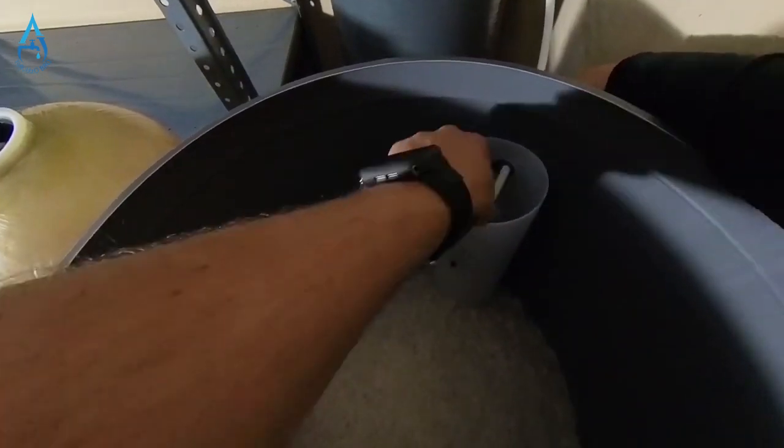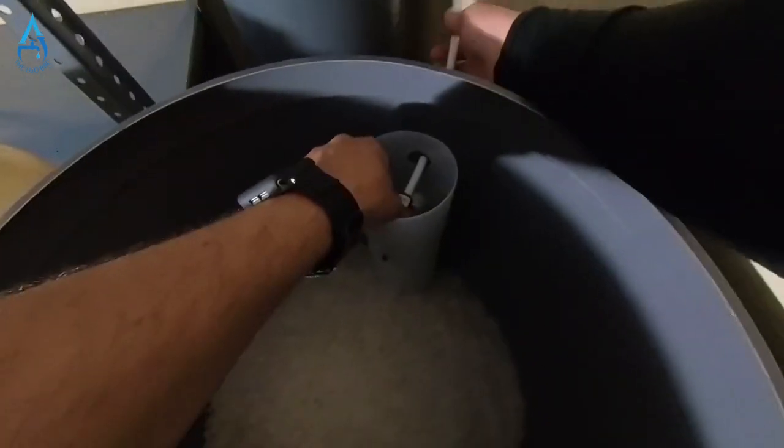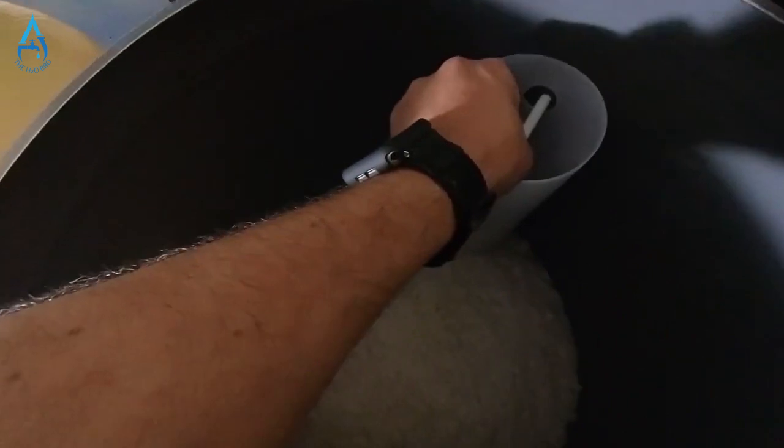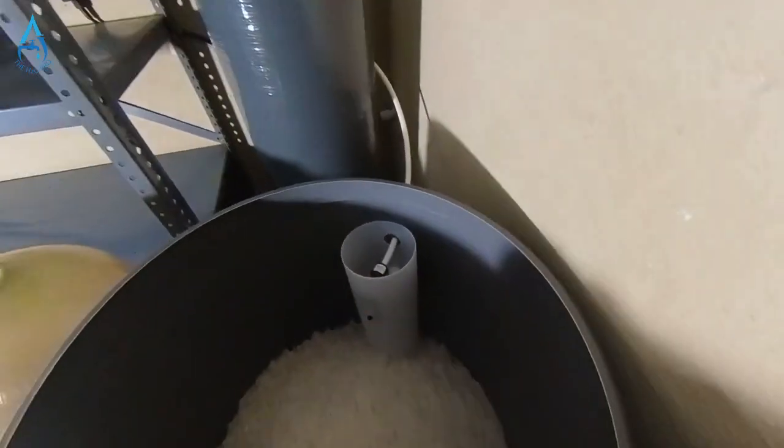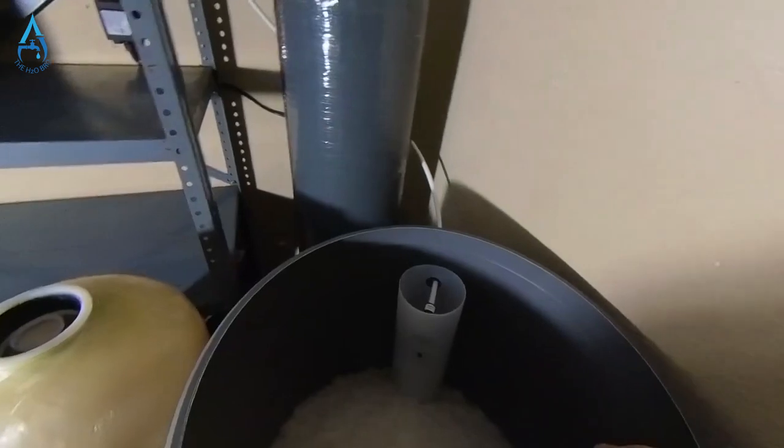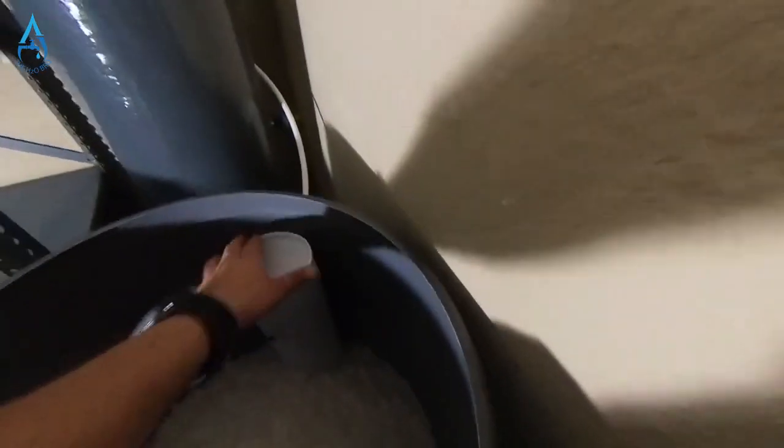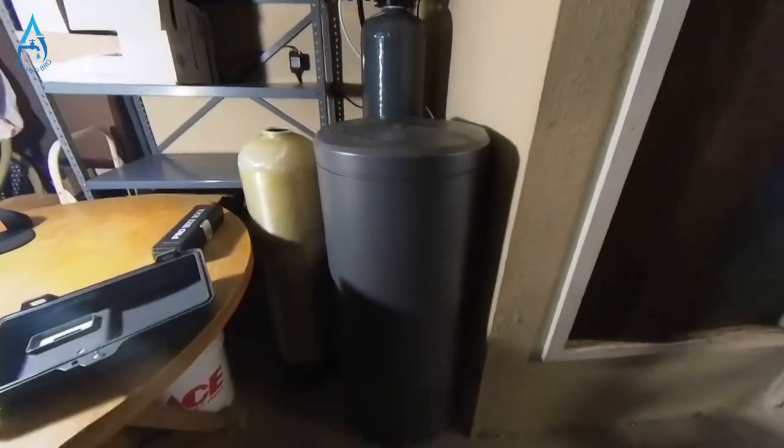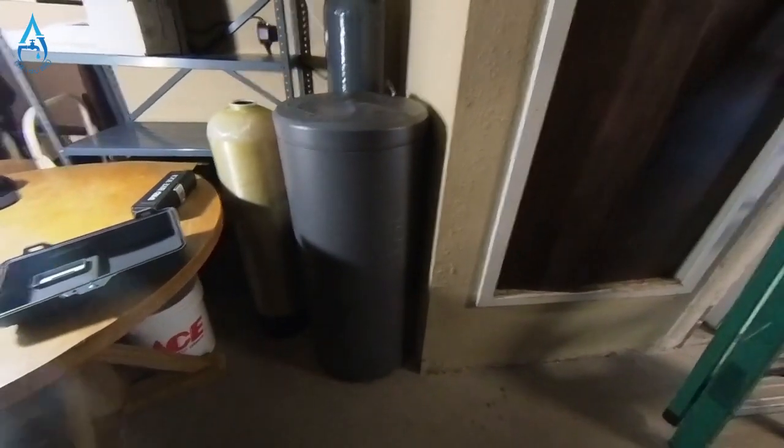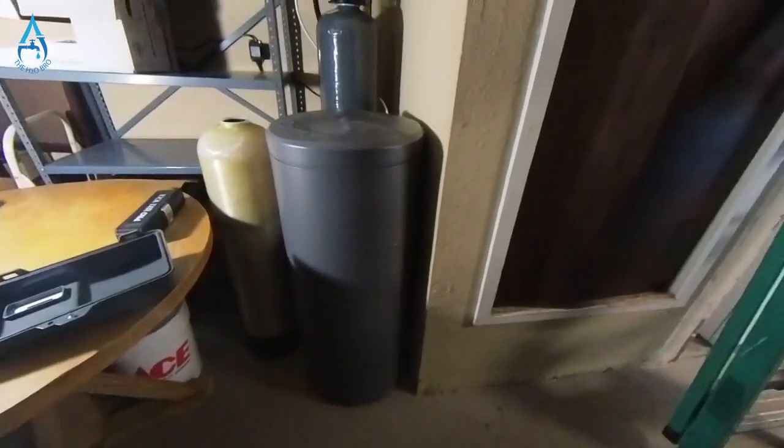So you're going to reconnect it and push it back in just like that until it locks into place. Now you can put your cap back on and you can put your lid back on. The fourth and final checkpoint is going to be to make sure that you don't have any bridging on your brine tank.